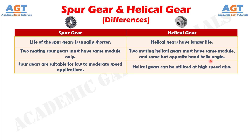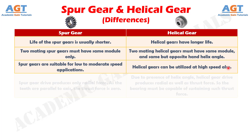Difference number 9: Spur gears are suitable for low to moderate speed applications, whereas helical gears can be utilized at high speed also.